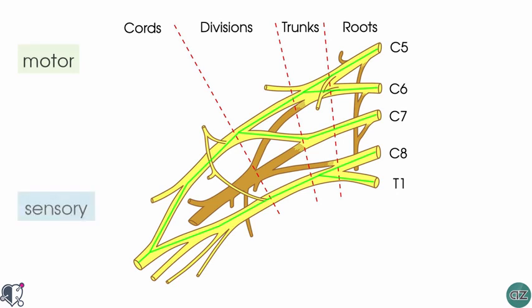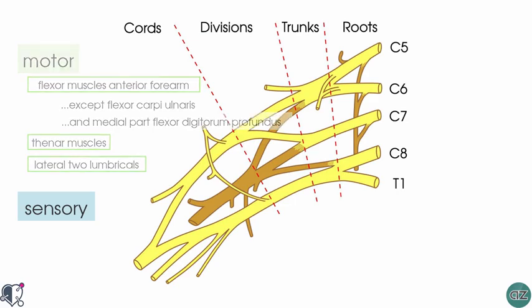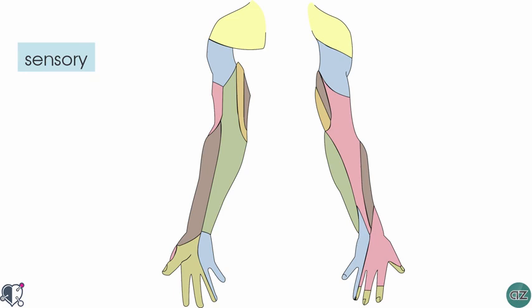The median nerve has both motor and sensory function. In terms of motor function, it innervates the flexor muscles in the anterior compartment of the forearm, except for the flexor carpi ulnaris and the medial half of the flexor digitorum profundus, which are innervated by the ulnar nerve. Within the hand, the median nerve supplies innervation to the thenar muscles and the lateral part of the palm. In terms of sensory innervation, the median nerve gives rise to a palmar cutaneous branch which innervates the lateral part of the palm. You can see a patch of skin on the palmar surface laterally innervated by this branch, and three and a half fingers also supplied by the digital branches of the median nerve.